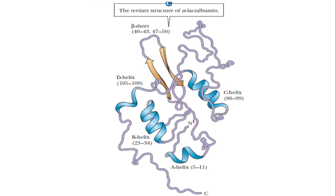Here what you see is the tertiary structure of alpha-lactalbumin. This is the C-terminal end. It is bent and folding in a particular form, and here you can see the N-terminal end. In some places it consists of an alpha-helix, and in some other places it constitutes a beta-pleated sheet — this is actually an anti-parallel beta-pleated sheet. So in tertiary structure, some part of the polypeptide chain may have an alpha-helix, some other part may have beta-pleated sheets. It is a combination of all those things, and this is what is called tertiary structure.